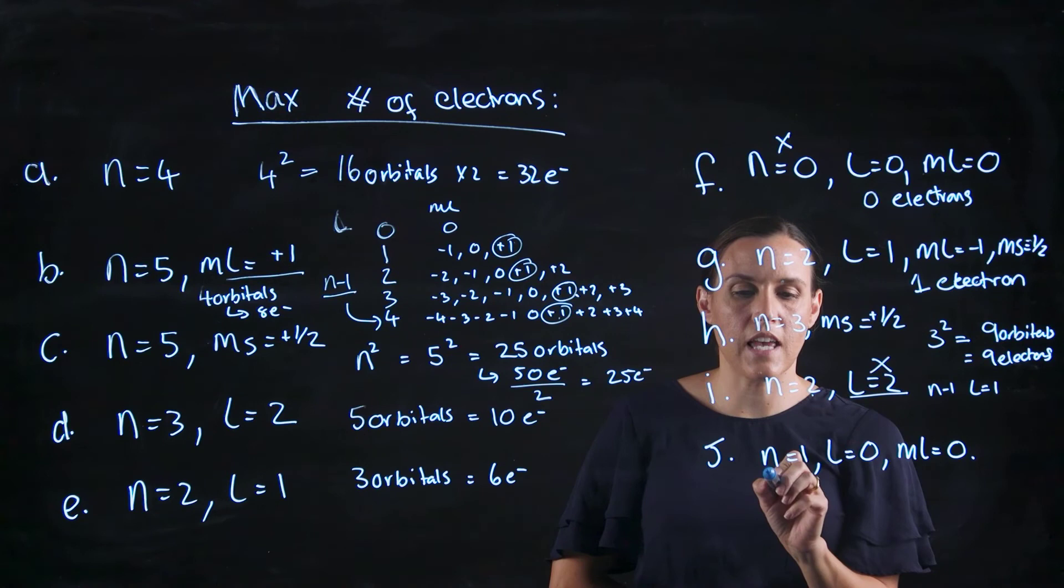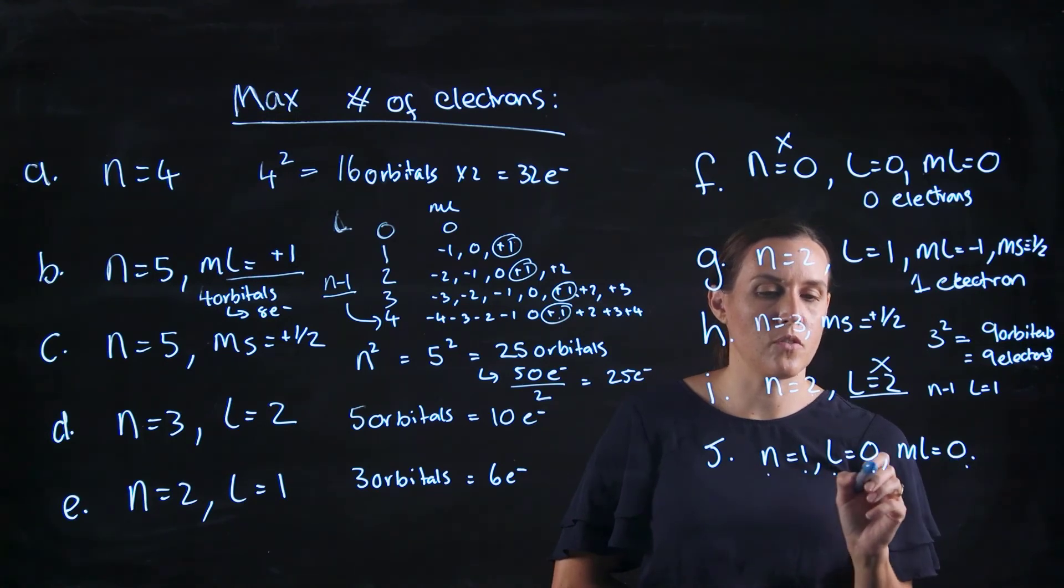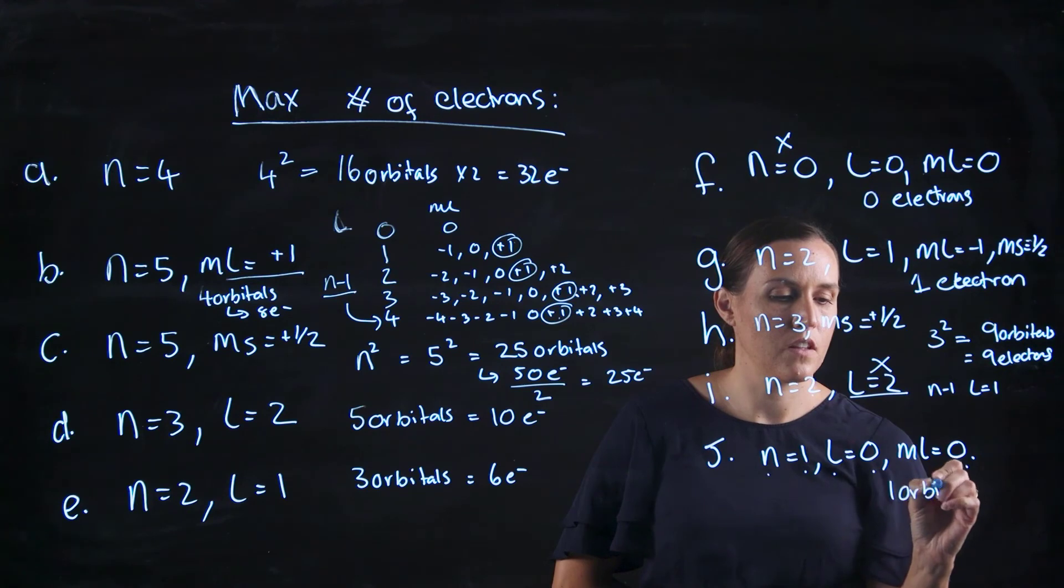Now the next one is n equals 1, l equals 0. So we're in an s orbital. And ml equals 0. So we've just gone from an s, one orientation. So it's one orbital and two electrons.